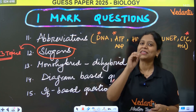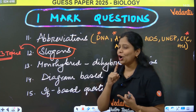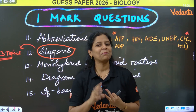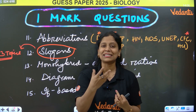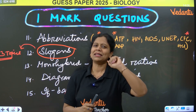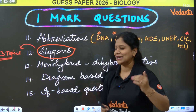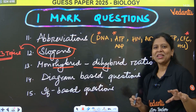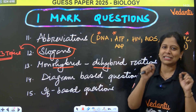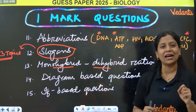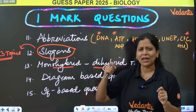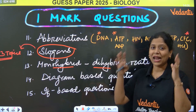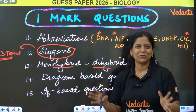Slogans will be there from three topics: organ donation, female foeticide, and one environment-related slogan — save environment, save water. Organ donation slogan is important. Monohybrid and dihybrid cross ratios — you have a monohybrid cross with genotypic ratio and phenotypic ratio. In the evening session I will go into detail. Right now I am just giving you the plan and strategy to prepare for biology to get 50 by 50.